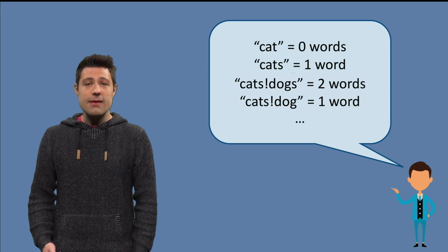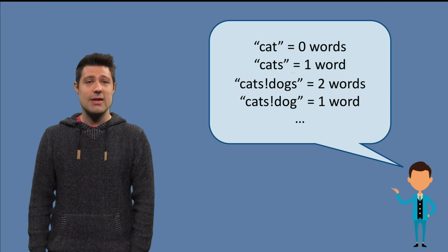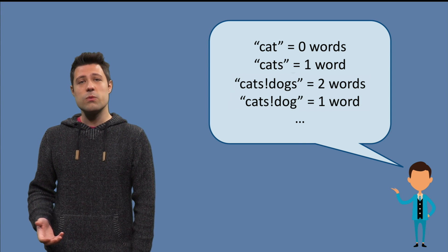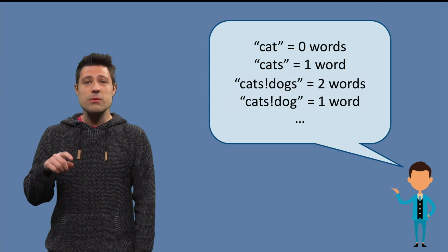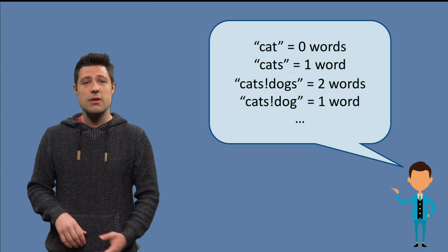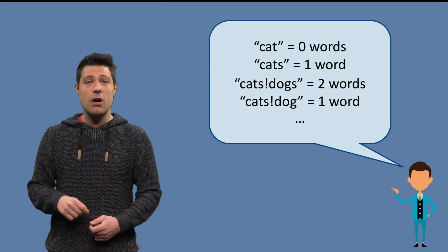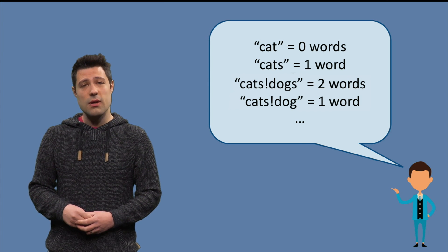For example, cat has zero words. Cats has one word. Cats exclamation mark dogs has two words. Cats exclamation mark dog has one word, etc.